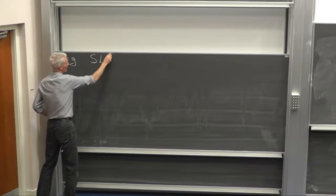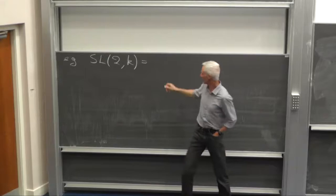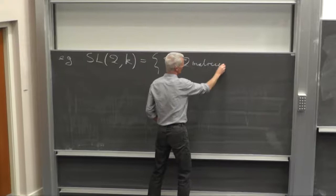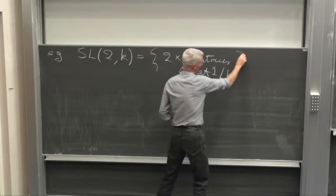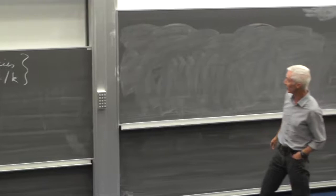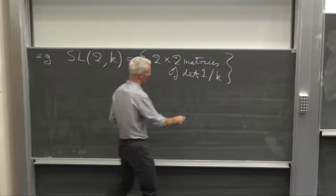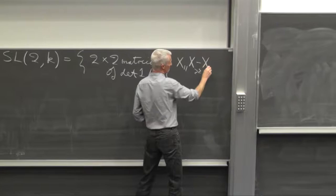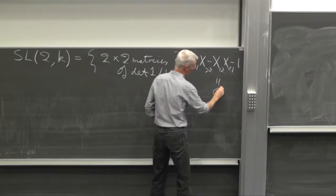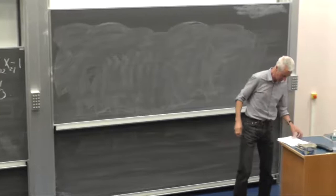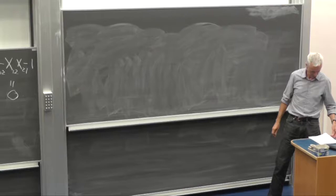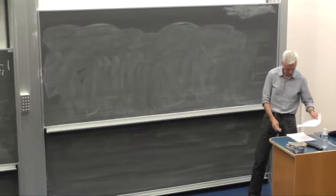So for instance, SL2K is the 2 by 2 matrices of determinant 1 over K. And there's only a single defining polynomial equation you need there to get you from affine 4-space to SL2K, and that's x1,1 x2,2 minus x1,2 x2,1 minus 1, where x1,1 is the map that takes you from a matrix to its 1,1 entry. And you can do SLn for any n.